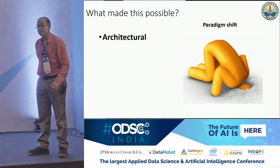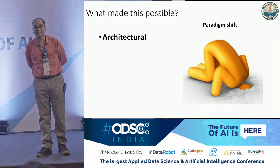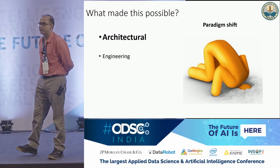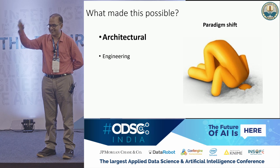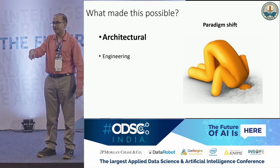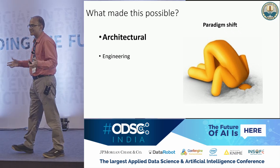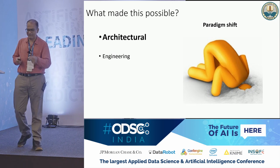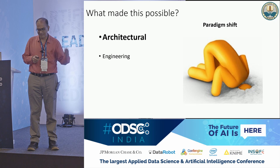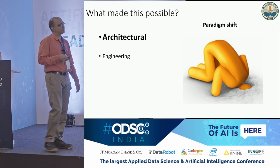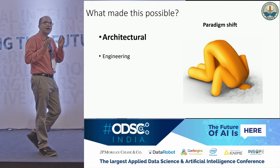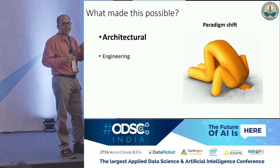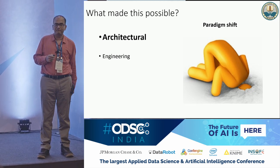Today we do machine learning a whole lot differently in certain areas compared to how we were practicing it four or five years back. Those changes happen both at an architectural level and at an engineering level. Given the time, I want to focus more on architecture. I thought for this group, architectural paradigm shifts would be more interesting. So the focus in the next 30 to 35 minutes is: what are we doing differently architecturally compared to five or six years back?